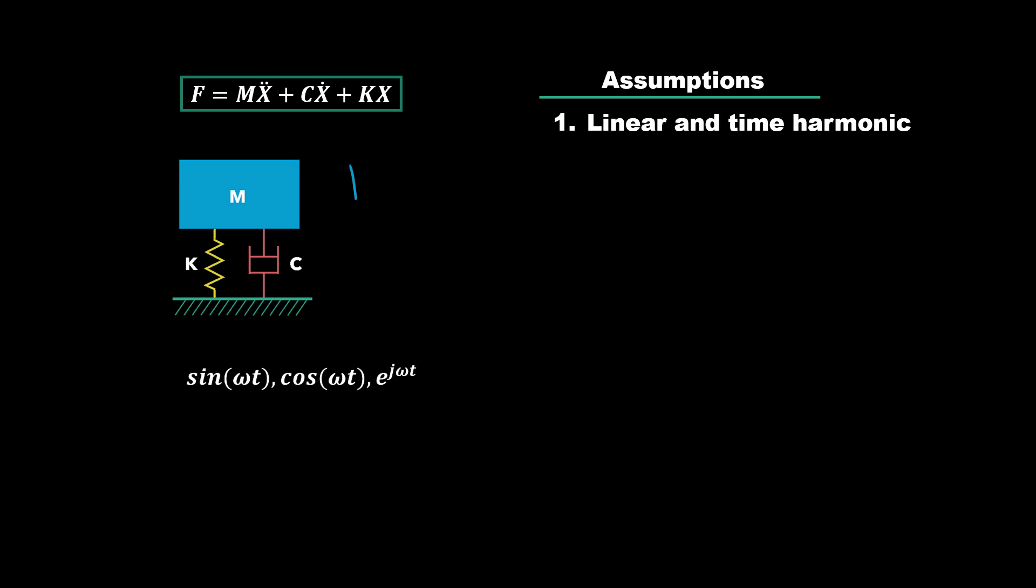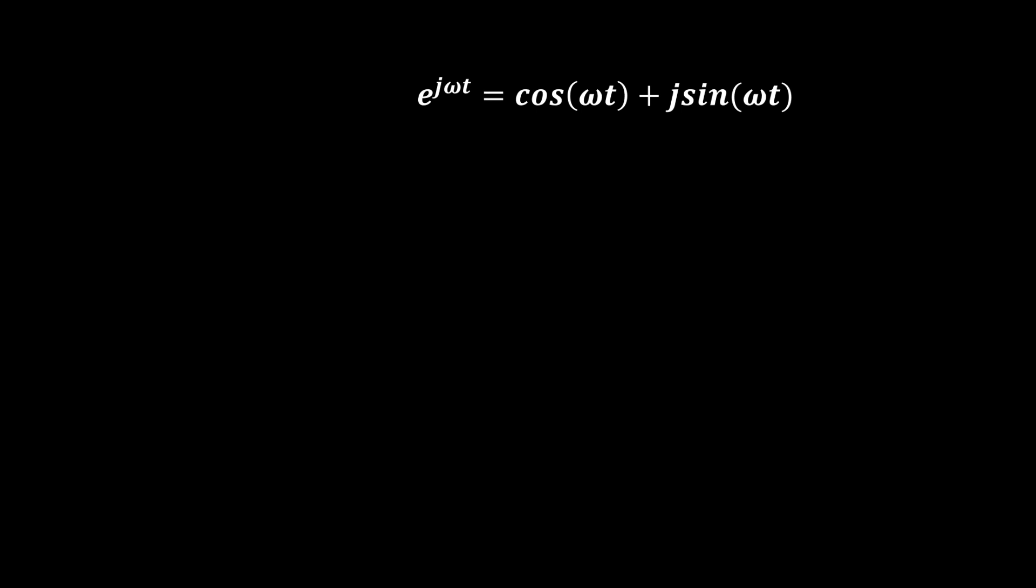Where j is just a replacement for the imaginary number i. You could use i if you want, but here we are using j. Omega is the Greek letter that represents angular frequency in radians per second. This is a little different than using f for frequency, because the units on that are in hertz. And then t just represents time. So e to the j omega t is also known as Euler's formula, and it's just represented by sines and cosines.